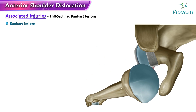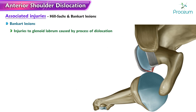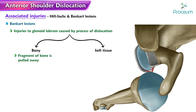Bankart lesions involve injuries to the glenoid labrum, the fibrous rim surrounding the glenoid cavity. These can be classified as either bony or soft tissue injuries. Bony Bankart lesions occur when a fragment of bone is pulled away, while soft tissue Bankart lesions involve disruption of the labrum without bone avulsion.